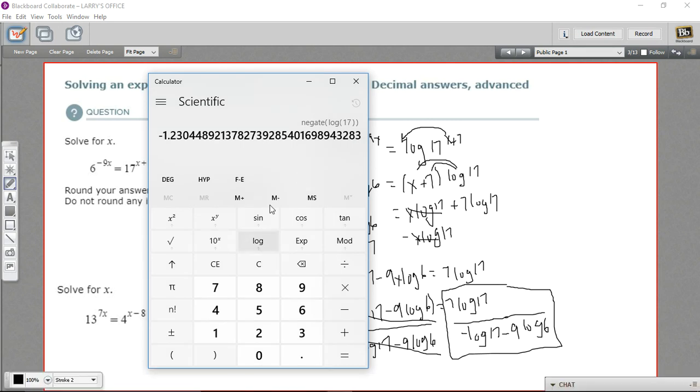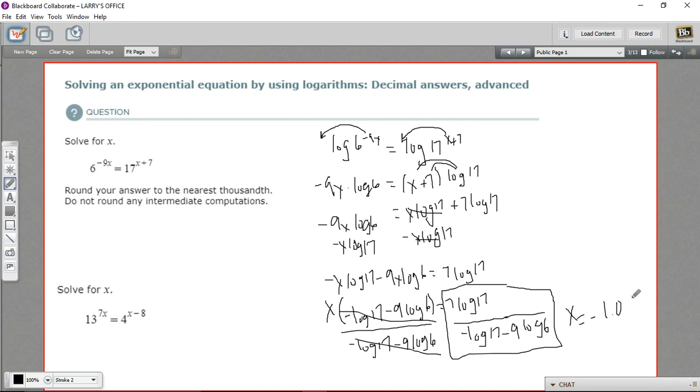So I'm going to just put that into memory here. And then we want 6, and we'll take the log of that and multiply by 9. And we're going to subtract that from this value. So I'm just going to make it negative and add it to the memory. Now let's recall. So that's what we've got on the bottom. We're going to divide this by that. So let's type in 17, and we'll take the log of that. And then we multiply that by 7. And then we're going to divide by what's in the memory here. And we get negative 1.05 to the nearest hundredth. So x equals negative 1.05.